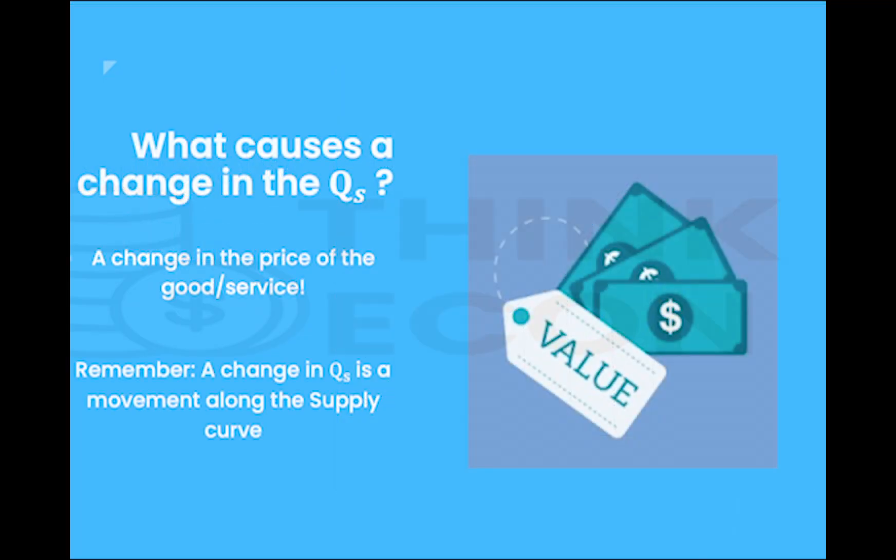So what causes a change in quantity supplied? Well, any change in the price of the good or service itself. Typically, as the price of a good increases, you would supply more due to the law of supply. This would imply a movement to the right along the supply curve. If prices decreased, you would move to the left along the supply curve.